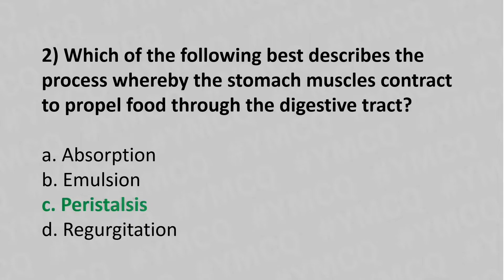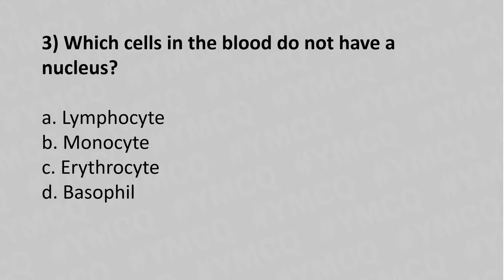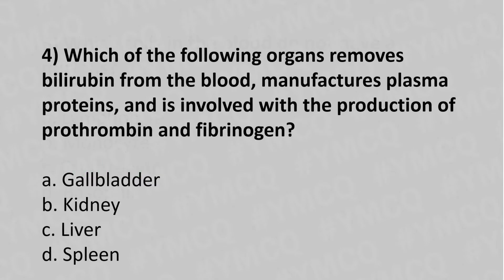Now let's move to question number three: Which cell in the blood does not have a nucleus? Option A: lymphocyte. Option B: monocyte. Option C: erythrocyte. Option D: basophil. The answer is Option C: erythrocyte.